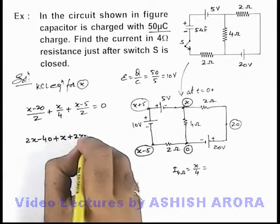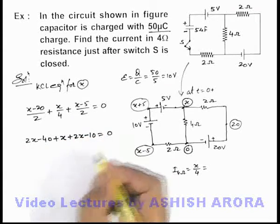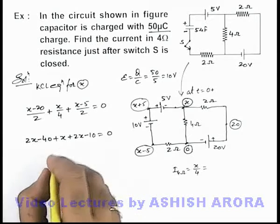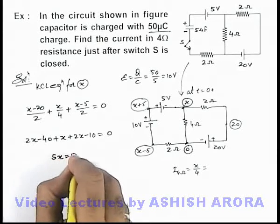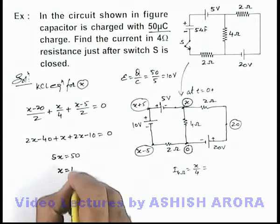Plus 2x minus 10 is equal to zero. So finally here we are getting it as 5x is equal to 50, so the value of x we are getting is 10 volt.